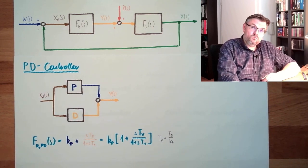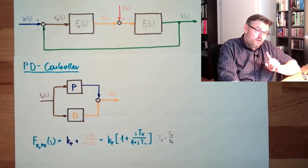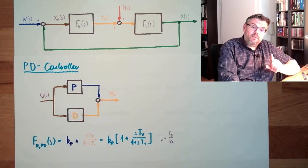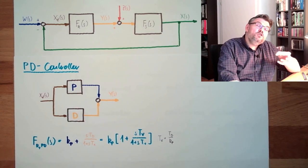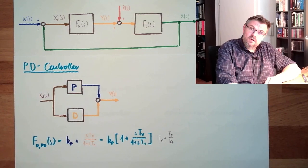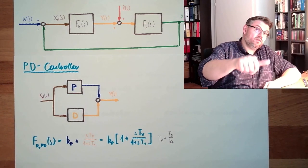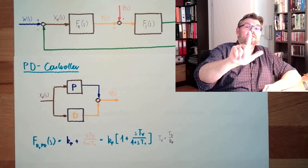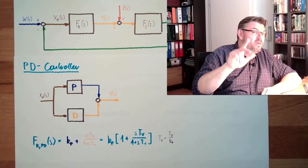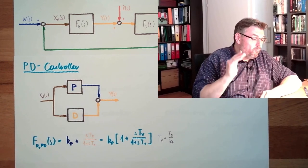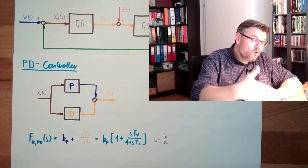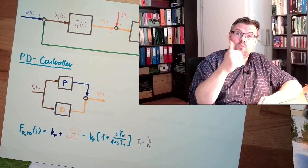So next time, finally, we're going to talk about the full combination of all those terms. So we talked about a PI-controller, we talked about a PD-controller. Next time, we're going to talk about a PID-controller. So we are combining all continuous controller types into one controller.